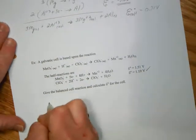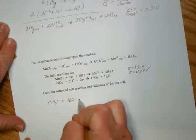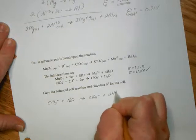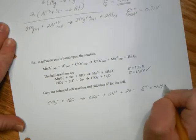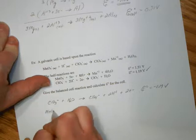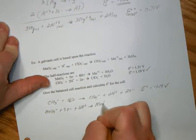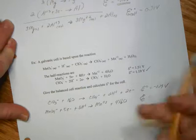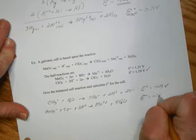So I'll have my chlorate reacting with water to give perchlorate plus two hydrogen ions plus two electrons, and then the E naught for that will be negative 1.19 volts. So my permanganate will remain the same, and my E value remains the same, which is positive 1.51 volts.